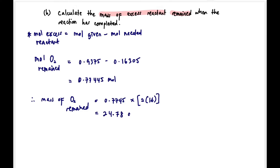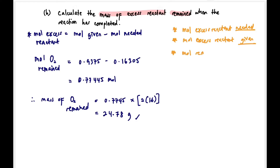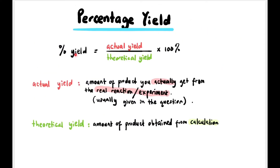Mass of O₂ remaining = 0.77445 × (2 × 16) = 24.78 grams. Recap: ensure you have mole of excess reactant needed and mole given (calculate from the start), then subtract to get mole remain, and finally calculate mass. The last part of this subtopic is percentage yield.